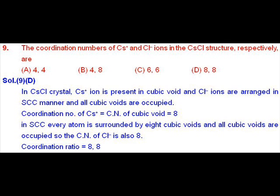And the center is surrounded by 8 corners. And at 8 corners, 8 chloride ions are present. That's why the cesium ion is surrounded by 8 chlorides. So the coordination number of cesium ions is 8.